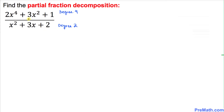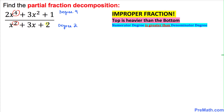As we can see, the degree at the top is 4 and the degree at the denominator is 2. So therefore we call this fraction an improper fraction — in other words, the degree at the top is greater than the degree at the denominator.